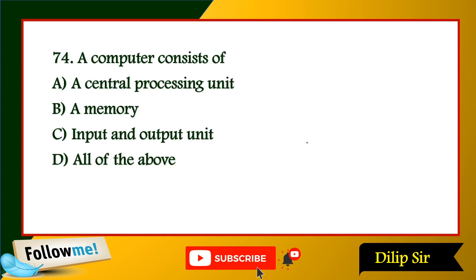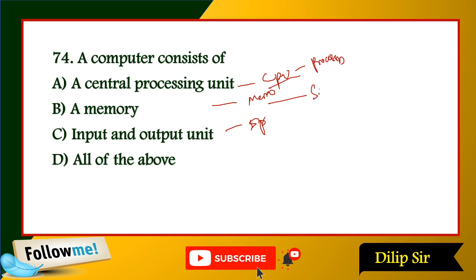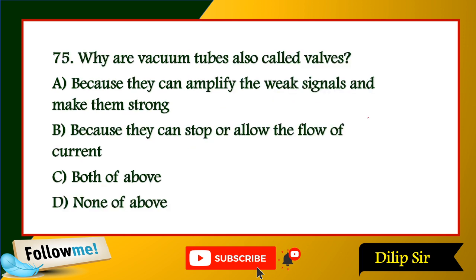The main components are: central processing unit, memory, and input/output unit — all of the above. Why are vacuum tubes also called valves?